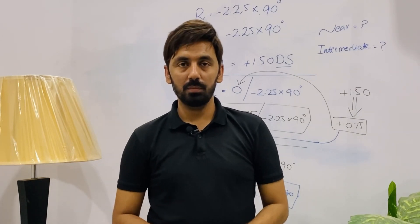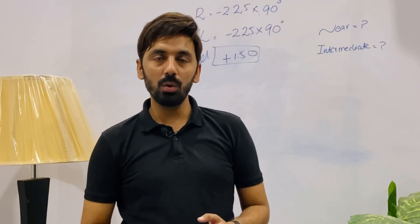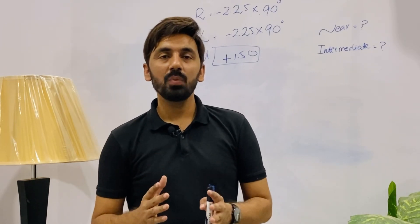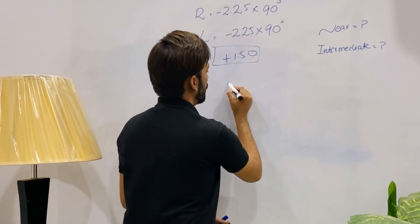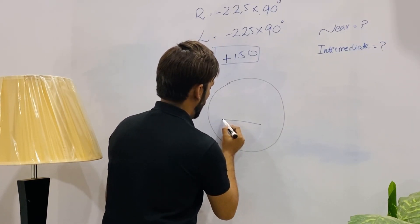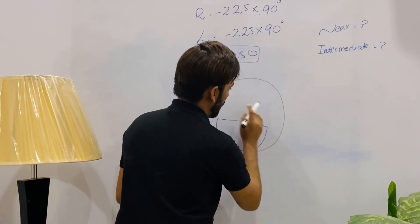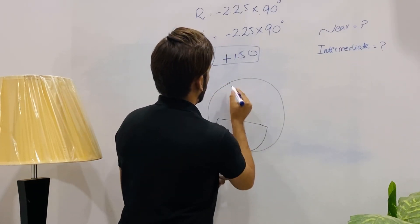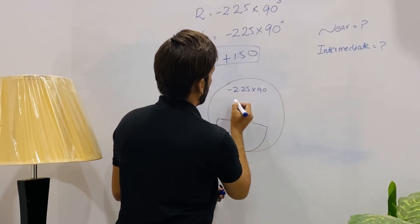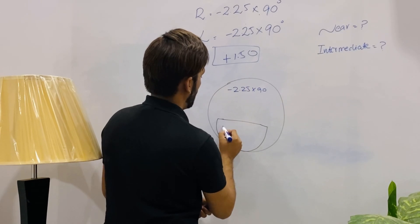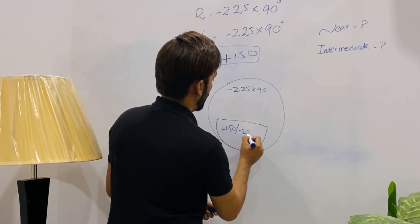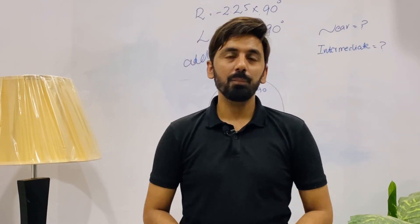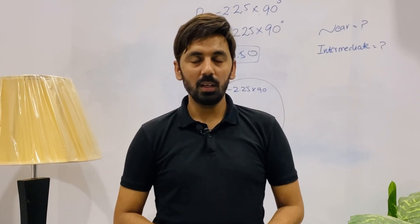The last part of this lecture covers the combination of near and intermediate prescription — for example, in a bifocal lens. This is a flat-top D bifocal: the main lens carries the distance correction, and the segment carries the near correction. In this case, the distance portion is minus 2.25 cylinder at 90 degrees for the right eye, and the addition is plus 1.50 with the same cylinder 2.25 at 90 degrees. I hope this is clear — if you have any questions, please comment and I will answer.